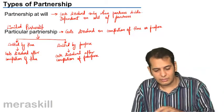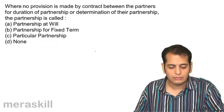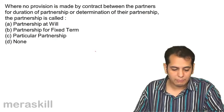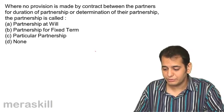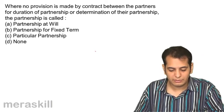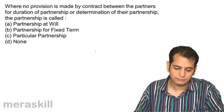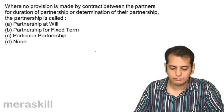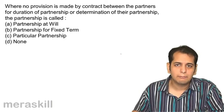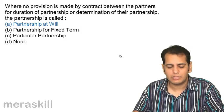Let's take a couple of questions. Question: Where no provision is made by contract between the partners for duration of partnership or determination of their partnership, the partnership is called — a) partnership at will, b) partnership for fixed term, c) particular partnership, d) none. Answer: There is no term fixed, so it will become a partnership at will.